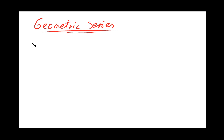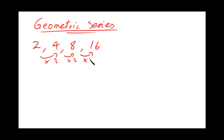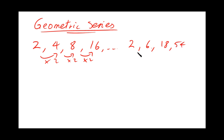Let's have a look at a couple of sequences. This one goes 2, 4, 8, and 16 — we can see we're multiplying by 2 each time. Another one could go 2, 6, 18, and 54, where we're multiplying by 3 each time. Both of these are geometric series.